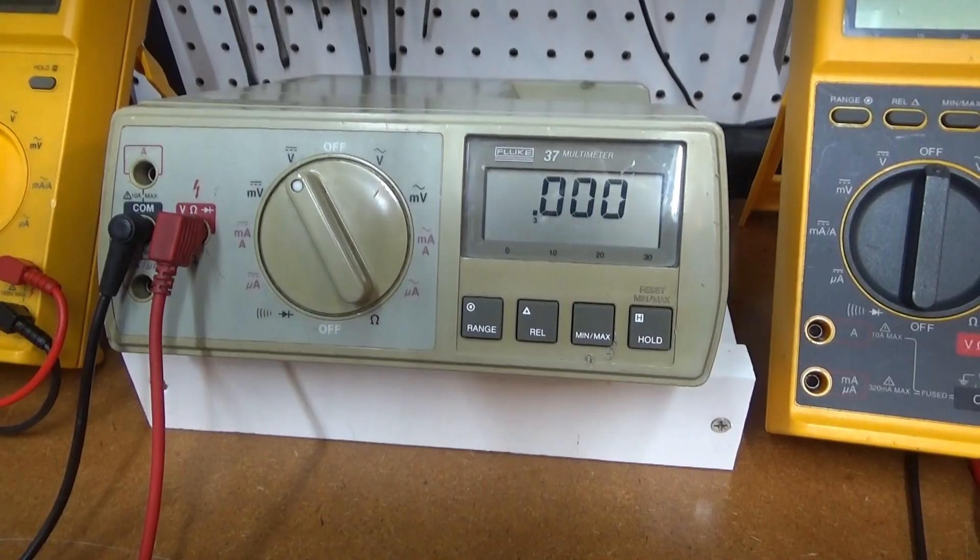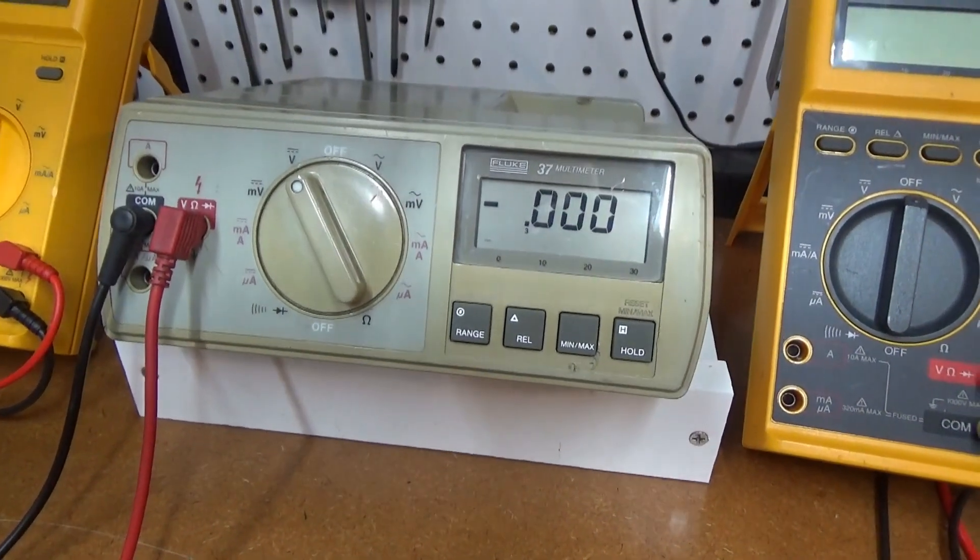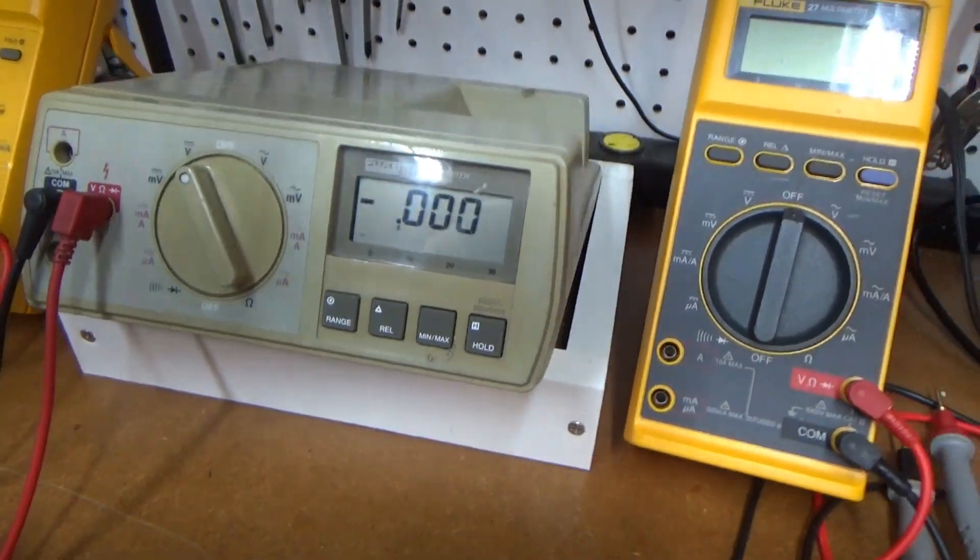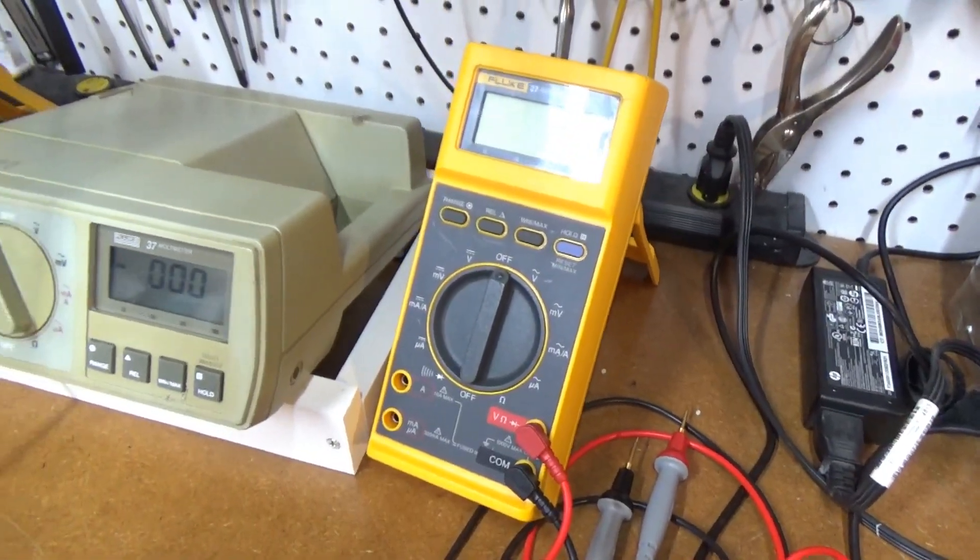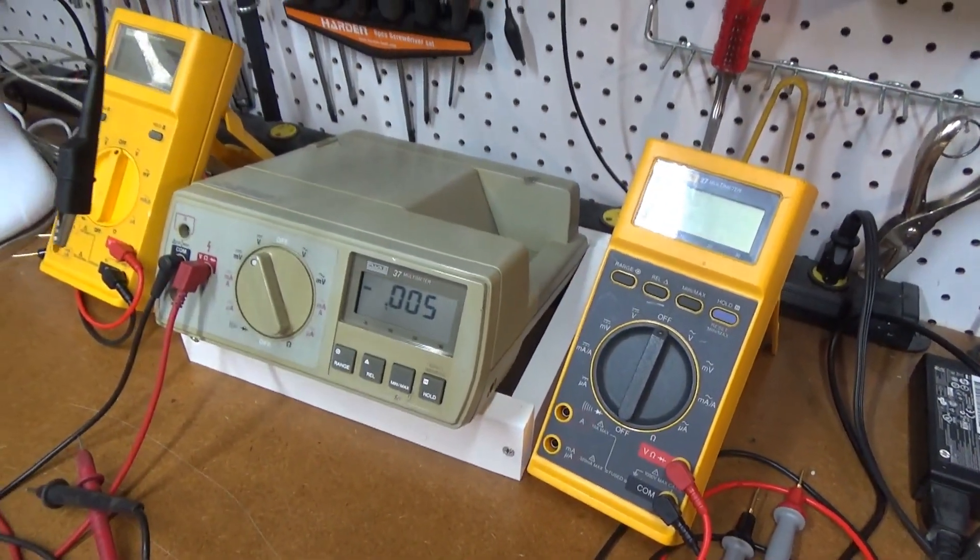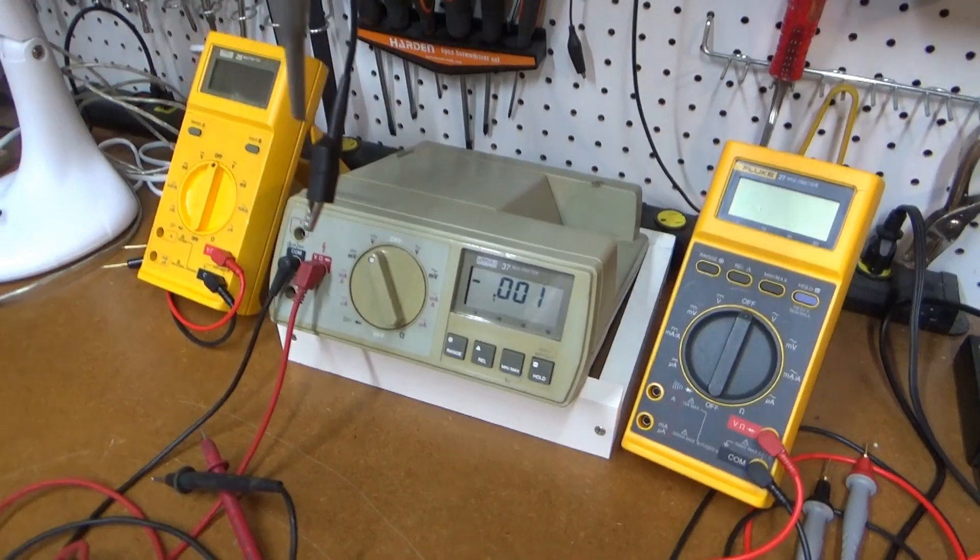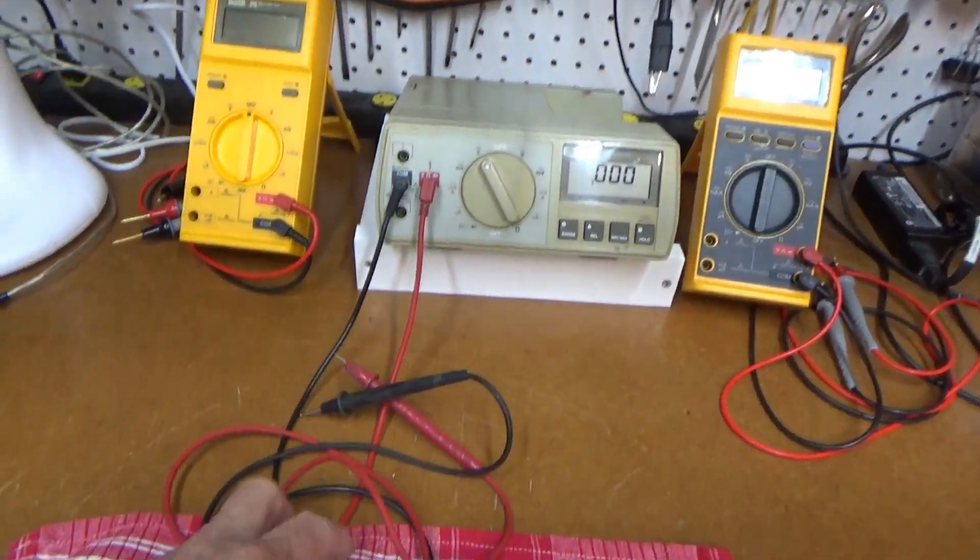1989 model of the Fluke model 37. It's a very cool old meter, super accurate. Not as rugged as these that it was based on, but it sits on your bench so it doesn't need to be super rugged.